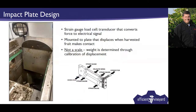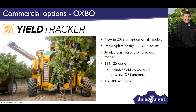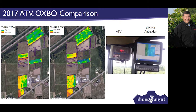Another yield monitor we're evaluating is an impact plate type, now commercially sold by Oxbow. This technology comes from grain harvesters — as grapes come off the belt they hit the plate, which is hooked up to a strain gauge, generating a signal proportional to crop flow. It's sold by Oxbow as an option on all new models with a retrofit kit for older models.